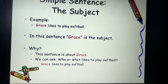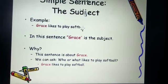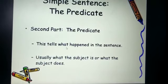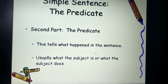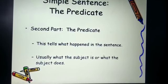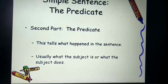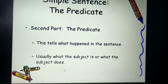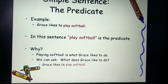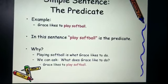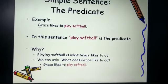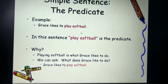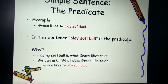Grace will be the subject. Now the second part of a sentence is the predicate. The predicate tells us what is happening in the sentence, or what activity is performed — usually what the subject is or what the subject does. For example, in Grace likes to play softball, what is Grace doing? He is playing softball. So likes to play softball is the predicate in this case.